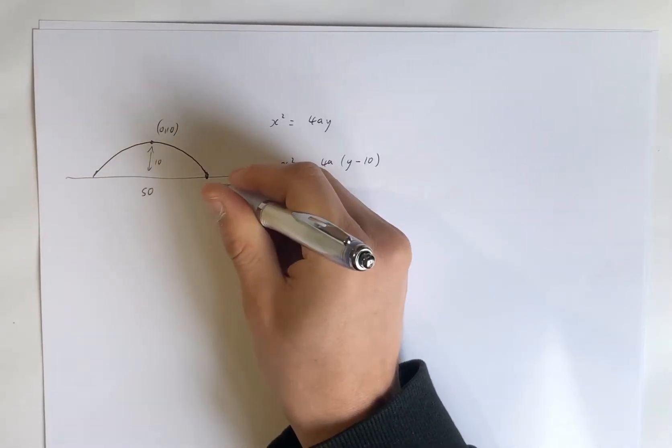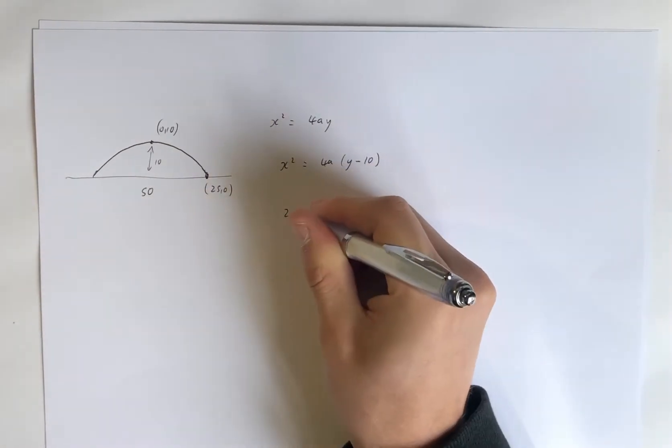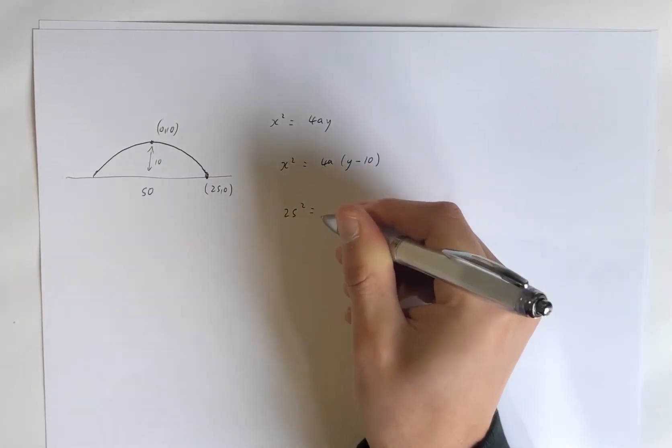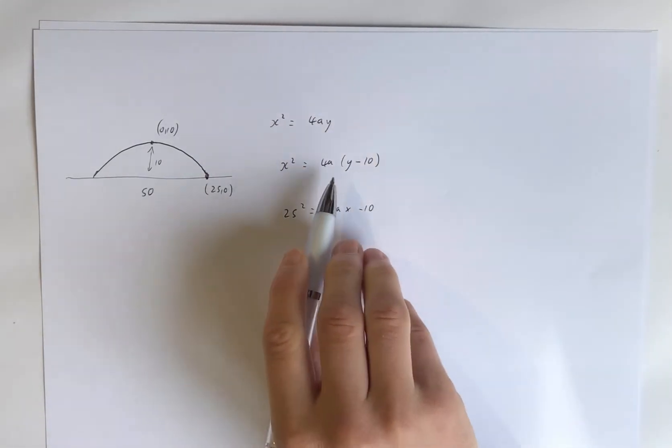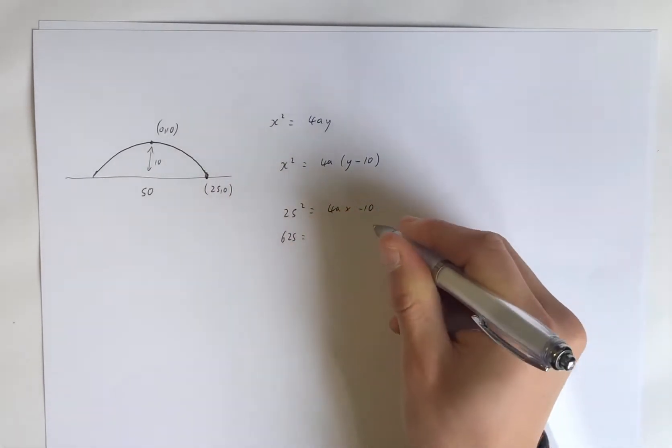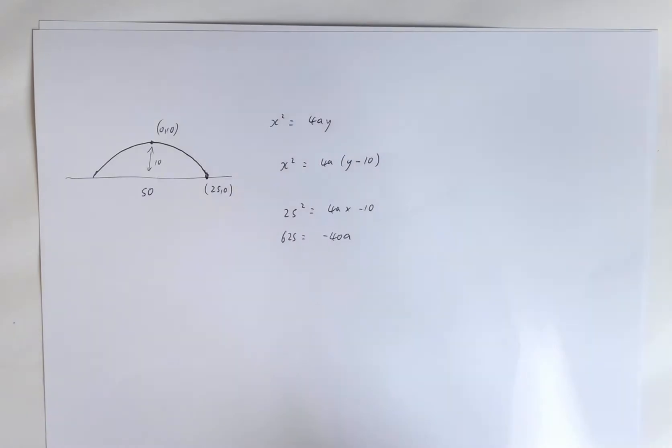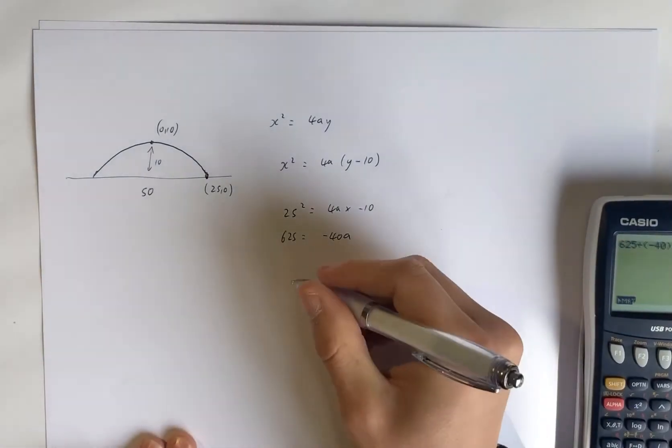So at that point, the amounts are with the 50, so it's 25 and 0. So put that in. 25 squared should be 4A times negative 10 because that's 0 minus 10. So 625 is equal to negative 40A. So we need to divide by negative 40.